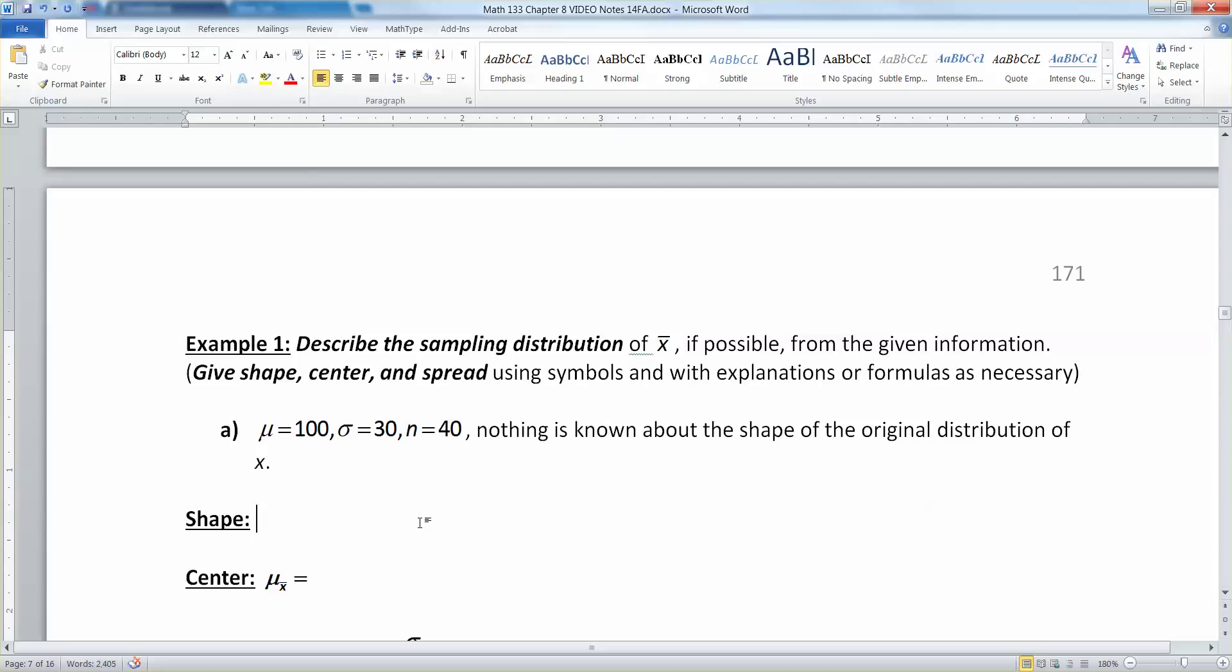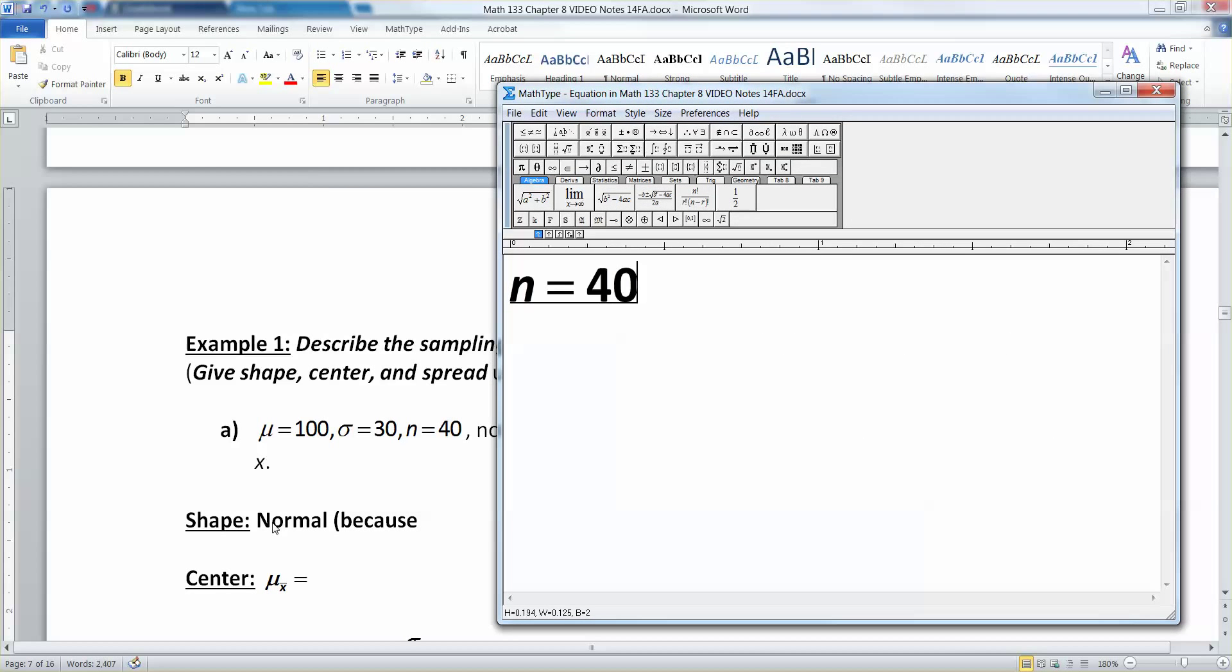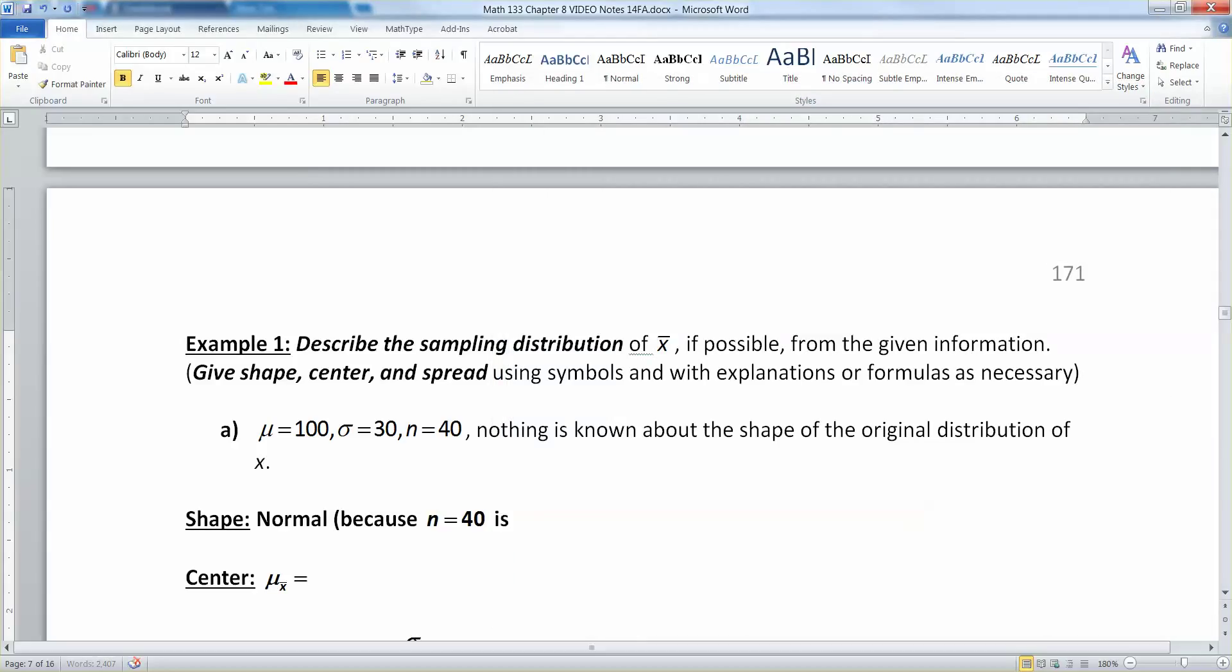Let's start with the shape. The mean is 100, standard deviation is 30, and the sample size is 40. We don't know anything about the shape of the original distribution, the population distribution. We don't know if it's skewed right, skewed left, nothing. Well, that's okay because our sample size is 40. Since 40 is greater than 30, that means this data set will be normally distributed.